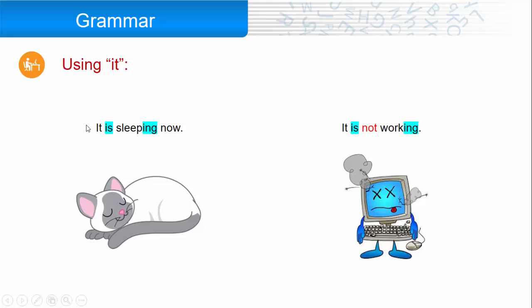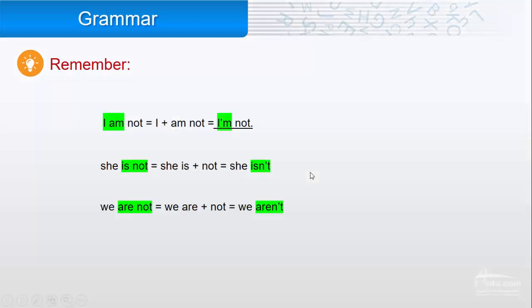When we talk about animals and things, we use the pronoun 'it.' It is sleeping now. It is not working. Remember, if I want to write 'I am not,' I can write the I and the am together, so it's 'I'm not.' She is not - we write the is and the not together, so it's 'she isn't.' We are not - we are and the not are together, so 'we aren't.'